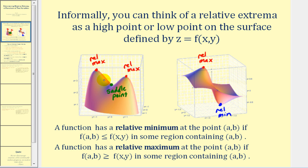For example, on this surface, these two red points represent relative maximum values. The green point here will sometimes appear as a critical number but does not represent a relative max or min and is called a saddle point. Over here on the right, we have a relative maximum, a high point, and the blue point here would be a relative minimum.